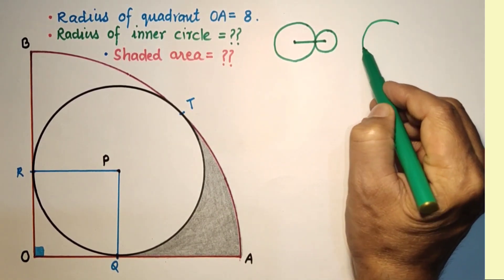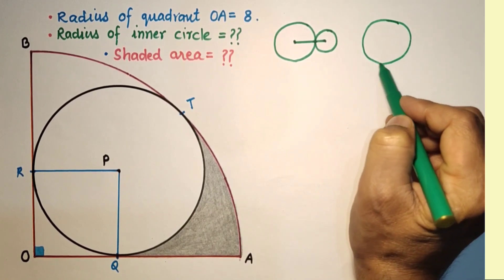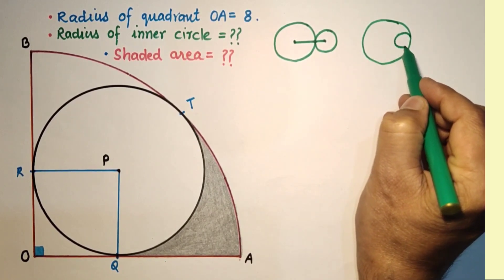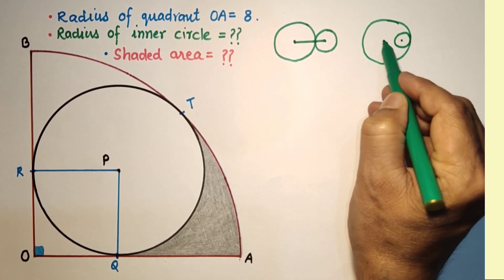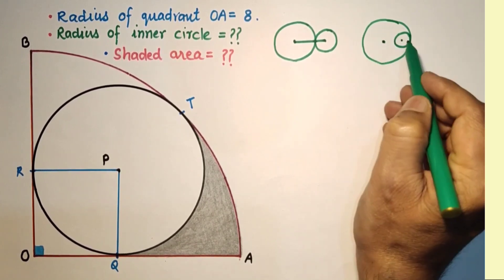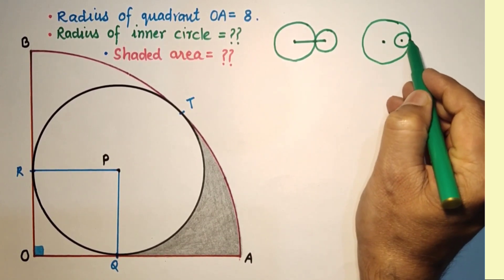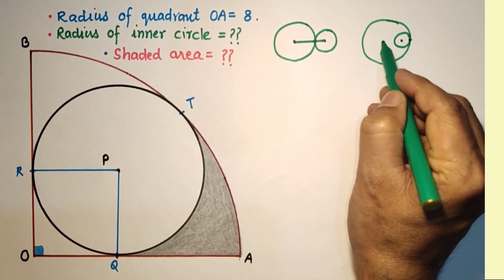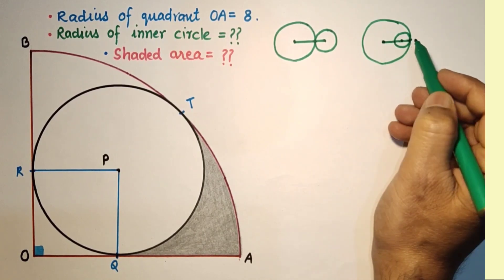And if one circle is touching internally, this is center of the bigger circle, this is center of the inner circle, this is point of contact. Once again, these three points will lie in a straight line.